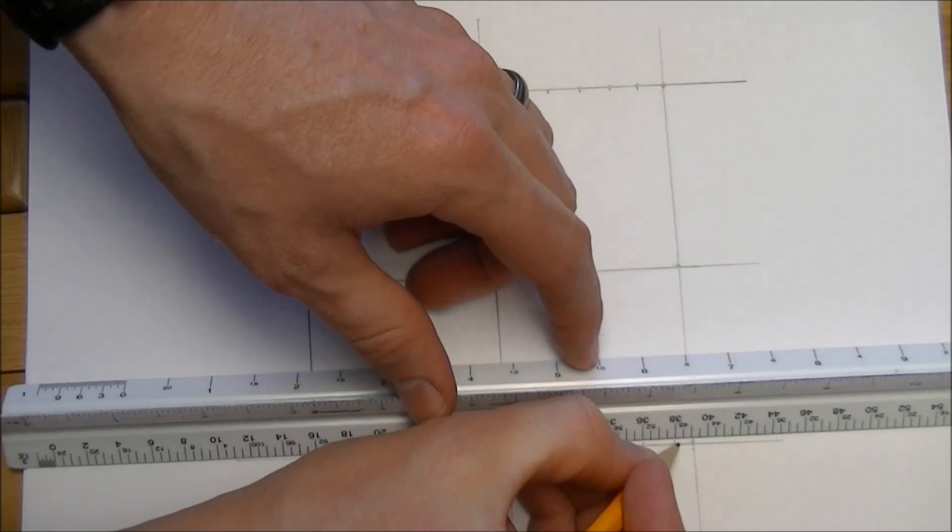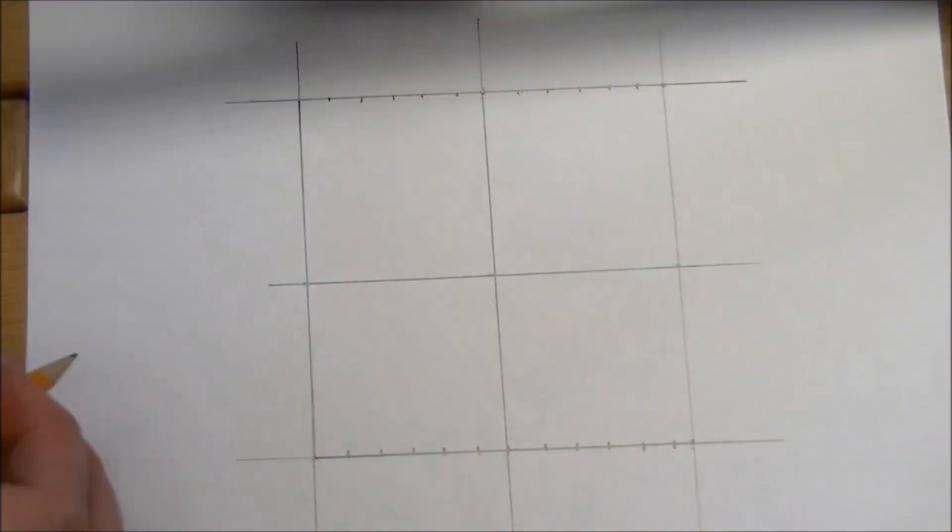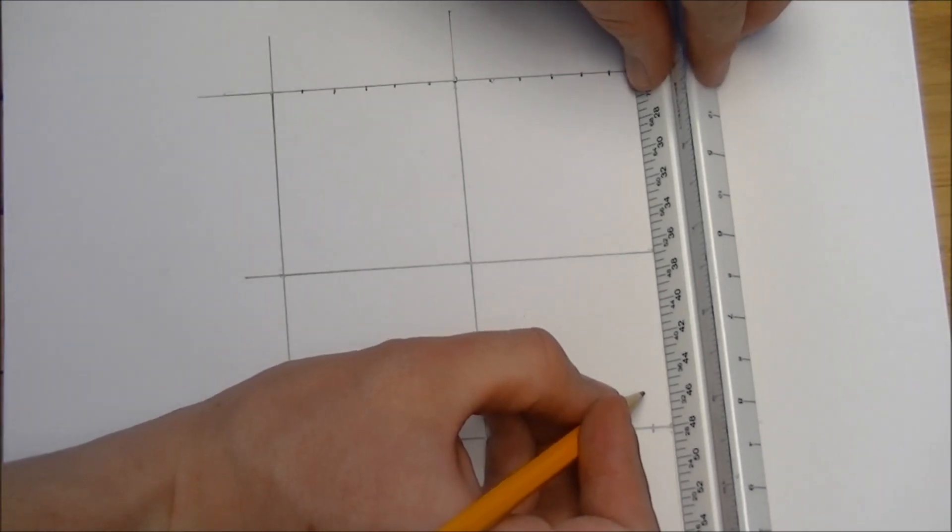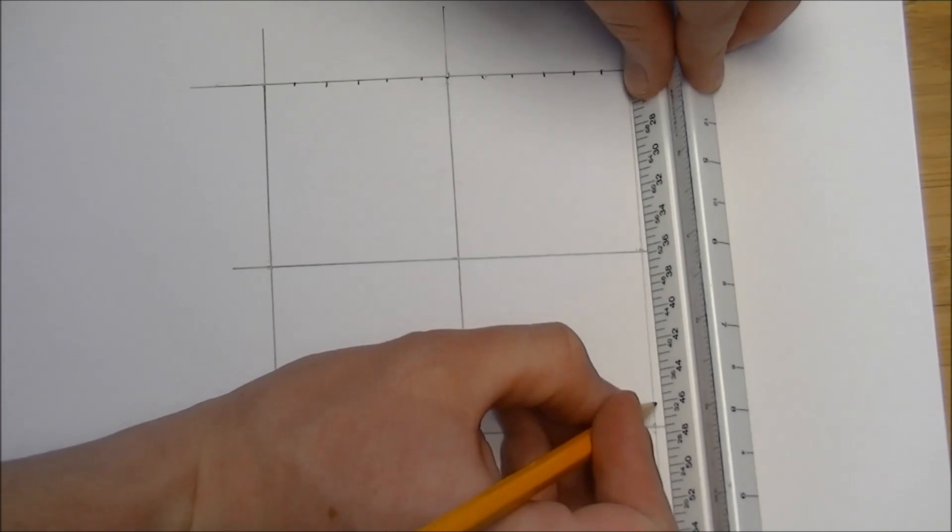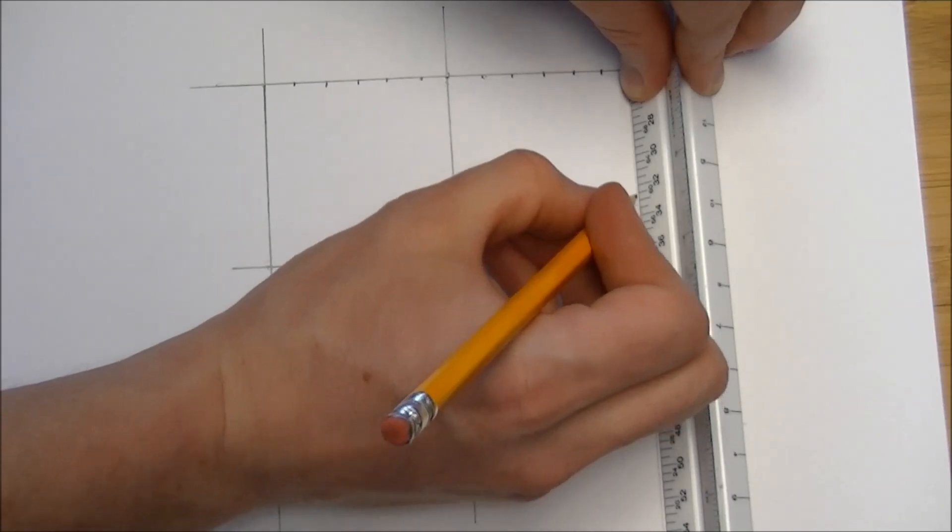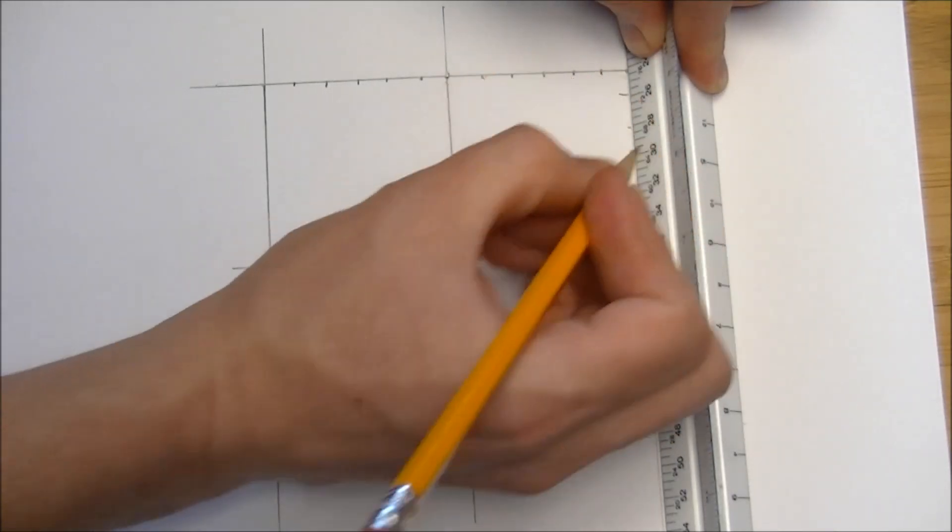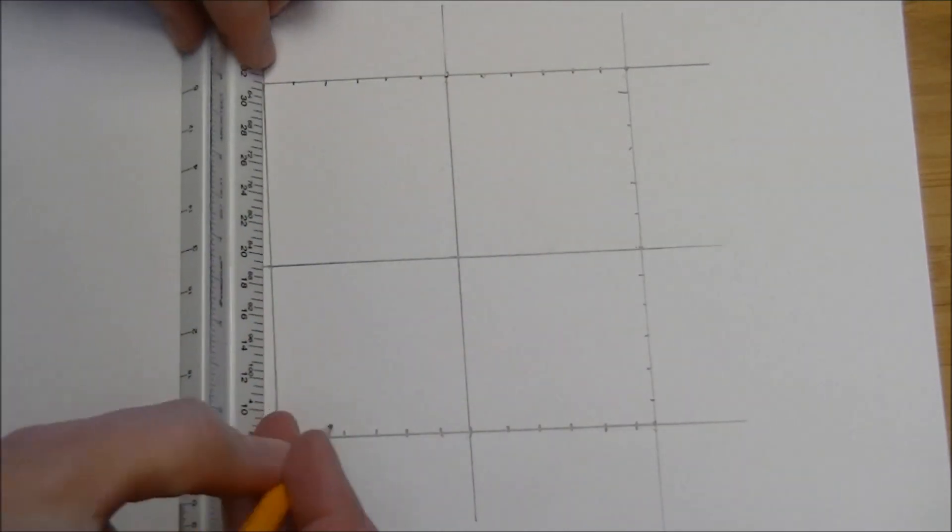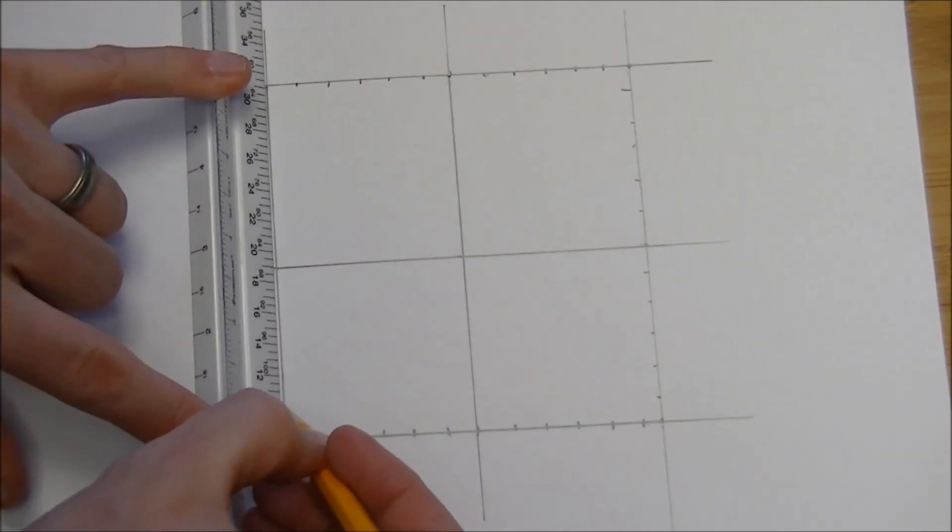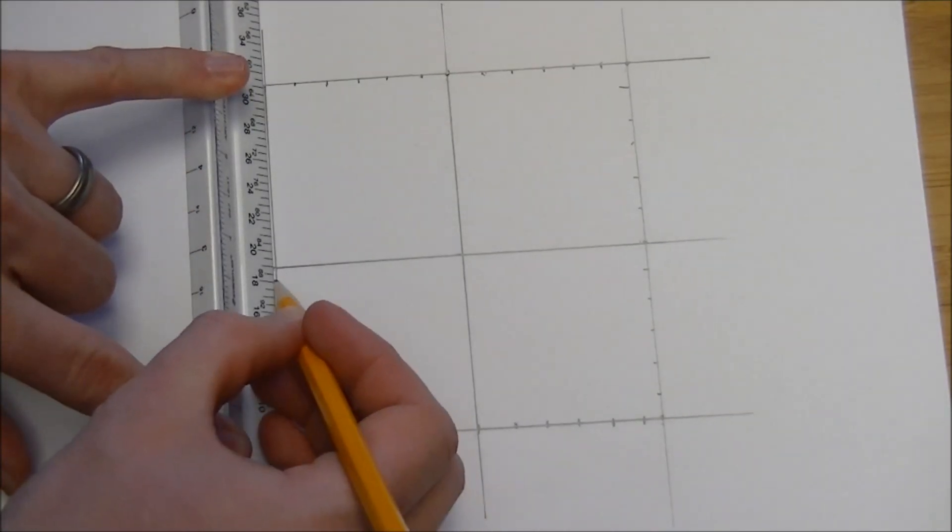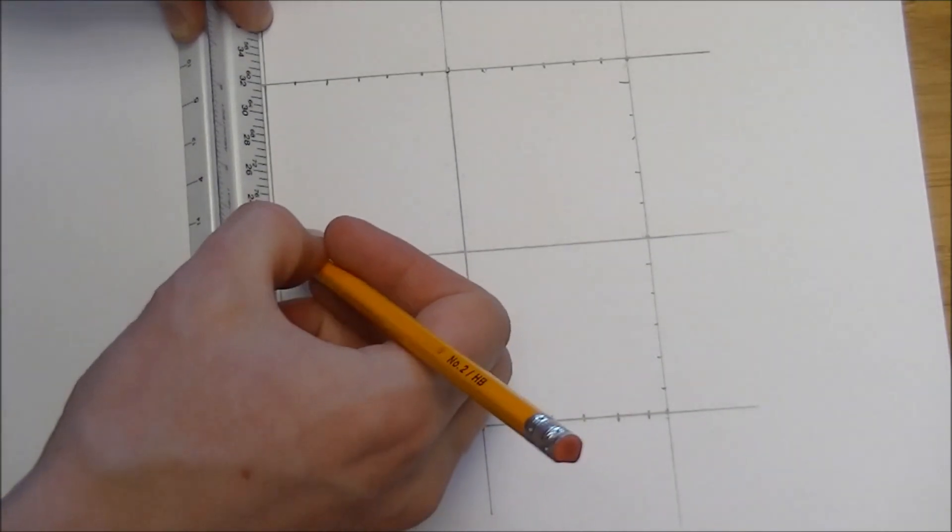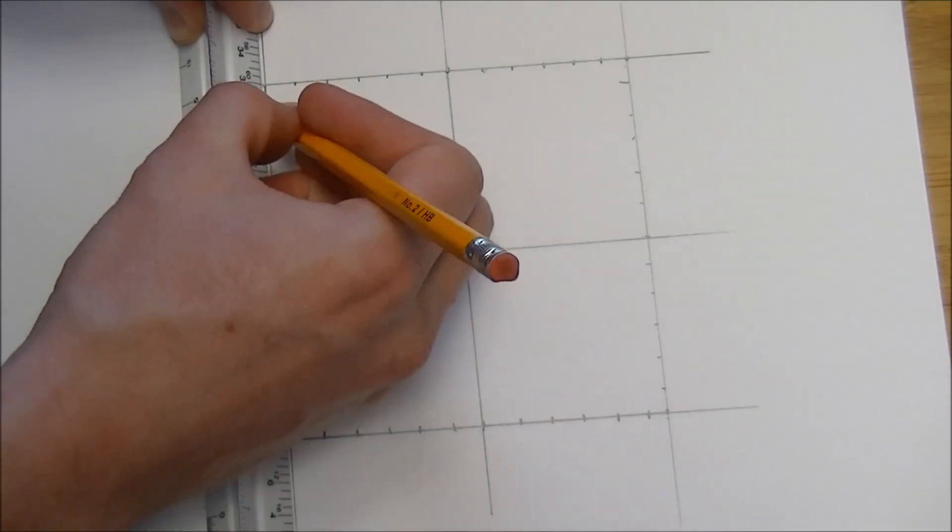The closer together you make the interval, the more like a circle this will look when it's done. All right. And it doesn't need to be very completely accurate.